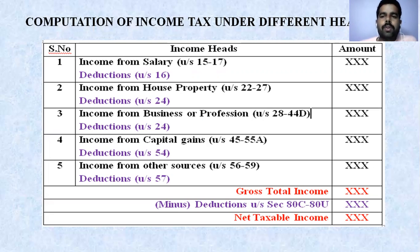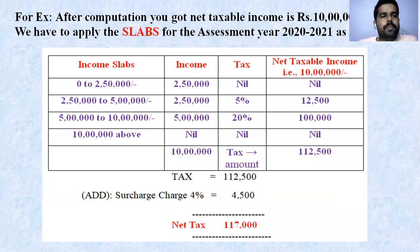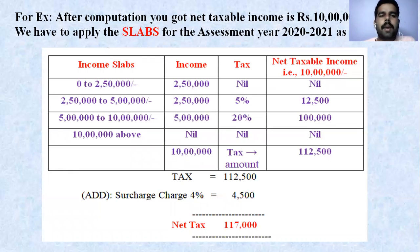After getting the Gross Total Income, we apply further deductions under sections 80C to 80U. Finally, you will get the net taxable income. From this table you will get clarity on how you are going to apply the slab rates and in what way they are applied.